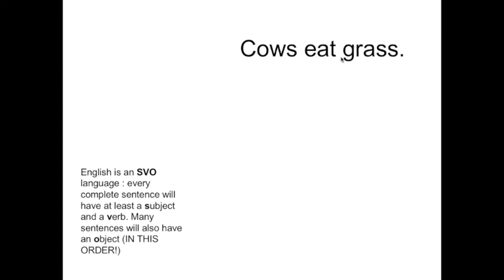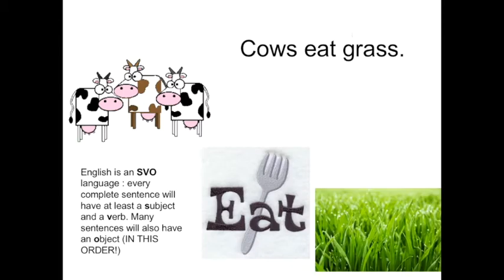Another important thing to keep in mind in English is that, with some exceptions, in most all cases you never have anything between the verb and the object. For example, in some languages you could say or write 'cows eat often grass' or 'cows eat always grass,' but in English that's not considered correct. The verb and the object always go together — 'cows eat grass': subject, verb, object.